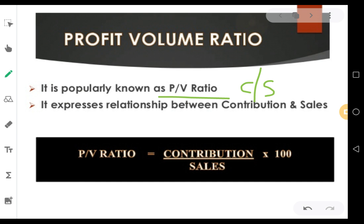To study this, we have a simple formula. Profit volume ratio equals contribution divided by sales, multiplied by 100. Contribution is always sales minus variable cost. So you can write PV ratio equals sales minus variable cost, that is contribution, divided by sales into 100.